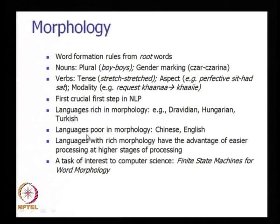Languages differ in their richness of morphology. For example, Dravidian, Hungarian, and Turkish are very rich in morphology, while Chinese and English are poor in morphology. This is where we stopped in the last class; now we proceed with further discussions, namely the stages of natural language processing.